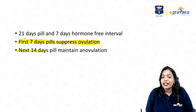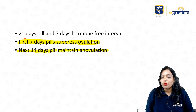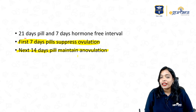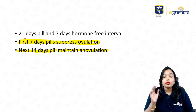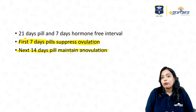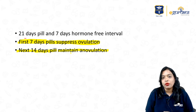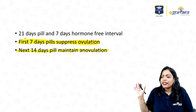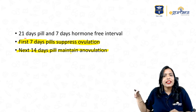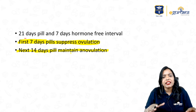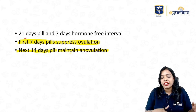The next 14 days of pills maintain the anovulation. So the first 7 days are most important because they are suppressing the ovulation, and the next 14 days are just maintaining the anovulatory state.